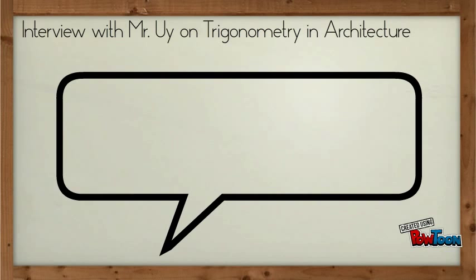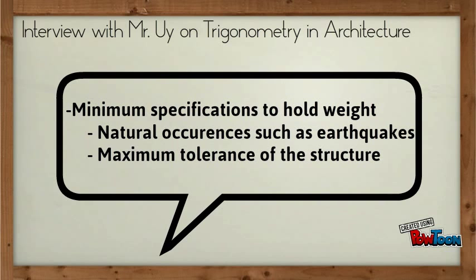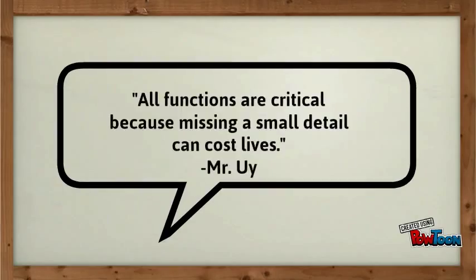Nadine and I interviewed Mr. Wee to get a different perspective on architecture. He stated that using trig, you can figure out the minimum specifications to hold the weight. Natural occurrences such as earthquakes should also be taken into consideration when finding out the maximum tolerance of the structure. He also said that all functions are important because missing a small detail can cost lives.